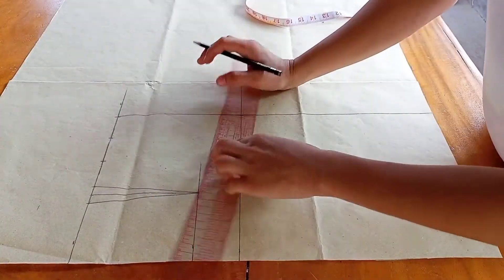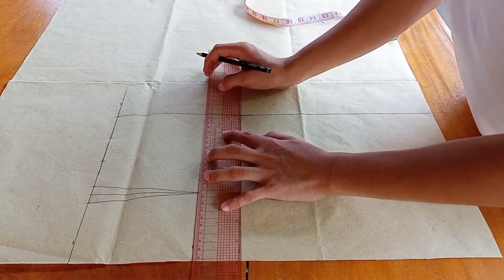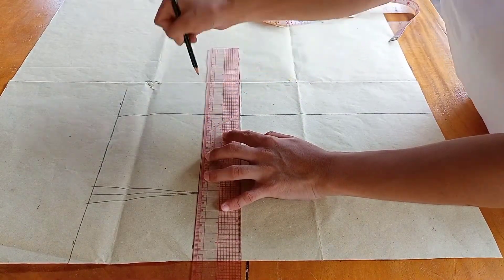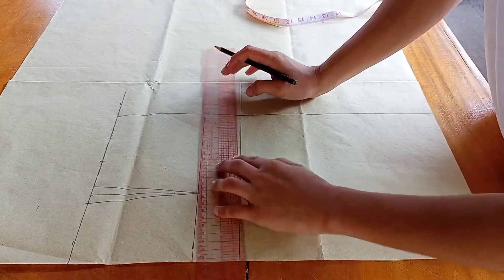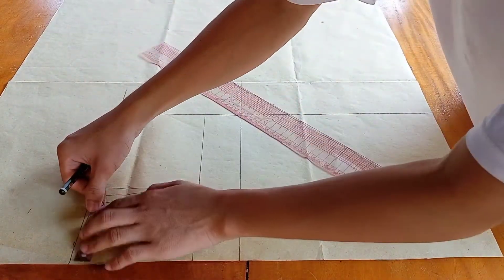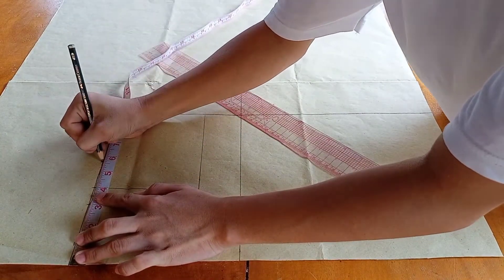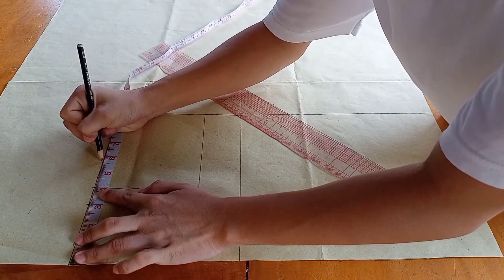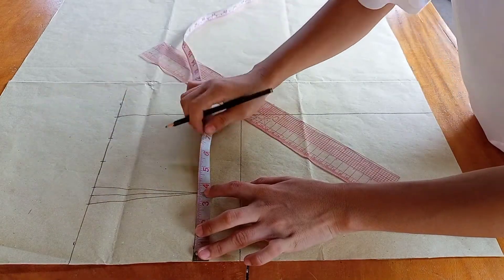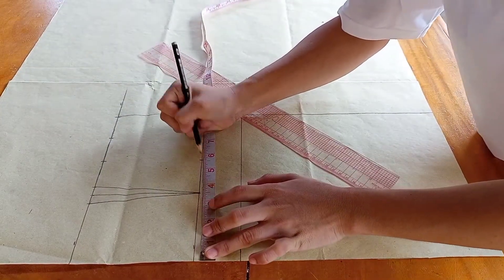Next step is to extend the line. This is optional, but if you're a beginner, you have to extend the line here. Now, for the second dart, measure up to the point, so 5 and 5/8 inches. Measure 5 and 5/8 here.